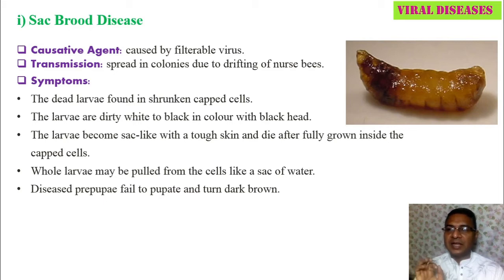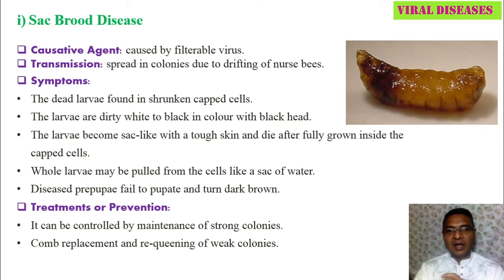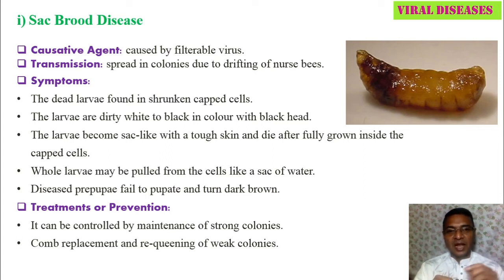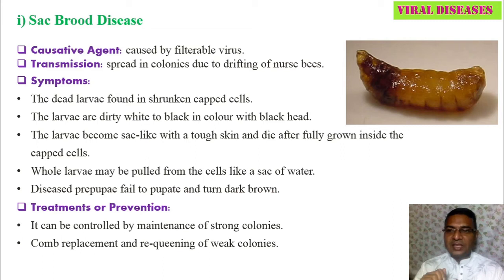To prevent or control sac brood disease: first, maintain strong colonies. Second, comb replacement and requeening of weak colonies — if infection is present in one or two frames, those frames can be removed. Weak or queenless colonies have greater chances of disease and infection, so beekeepers must introduce a new queen to queenless colonies — that is requeening of weak colonies.